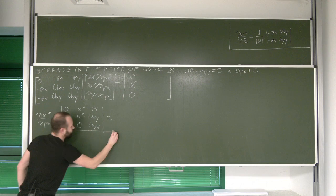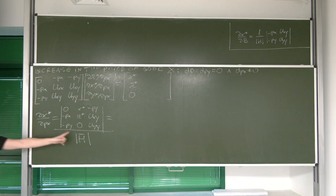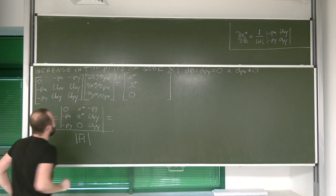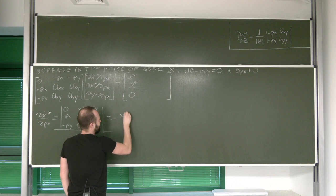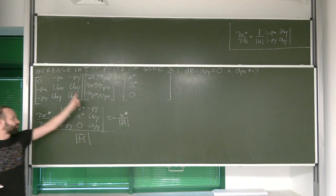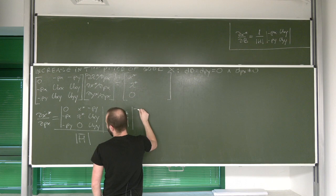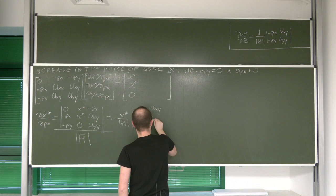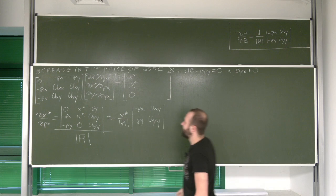What we're getting here is we're going to have a minus in front — x — divided by the bordered Hessian. We delete the first row and second column, and we are left with the expression: negative Px, negative Py, Uxy, Uyy. Then this one comes with a positive sign.